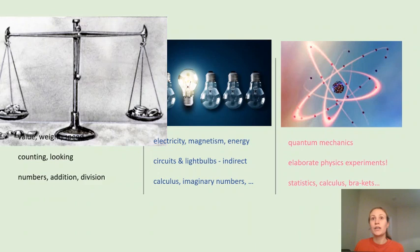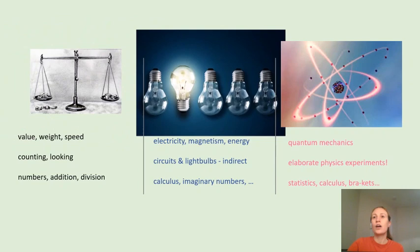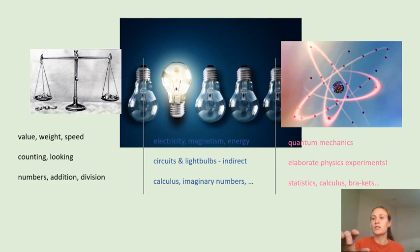So, for example, if I pick something up, I immediately get a sense of whether it weighs a lot or not. And the maths of the time reflected this. So, for example, we use division to calculate speed as the distance divided by time. As time went on, though, people started studying things that are more difficult to experience and that we see in an indirect way.